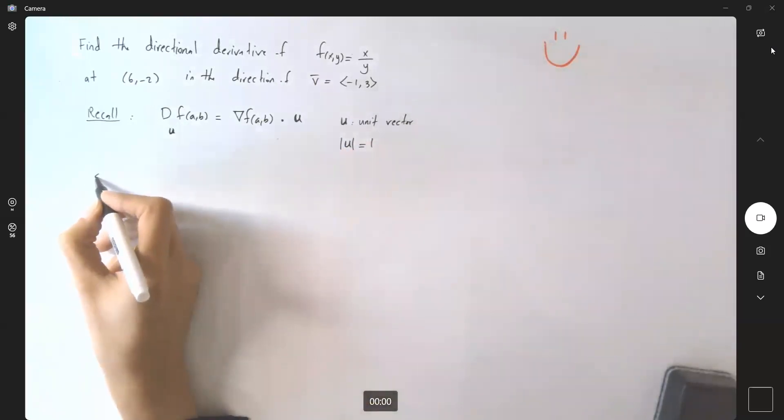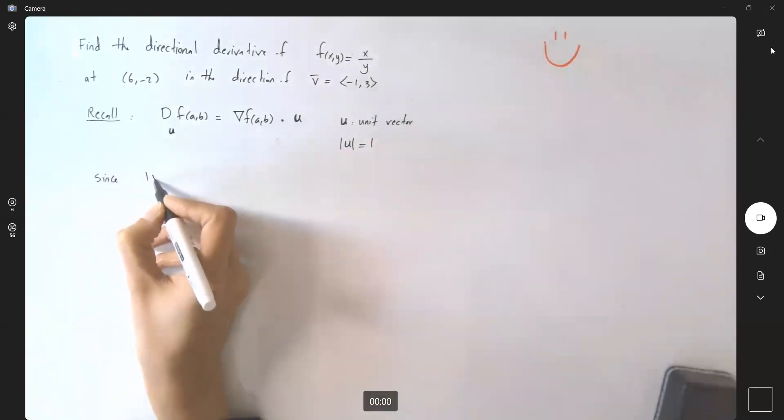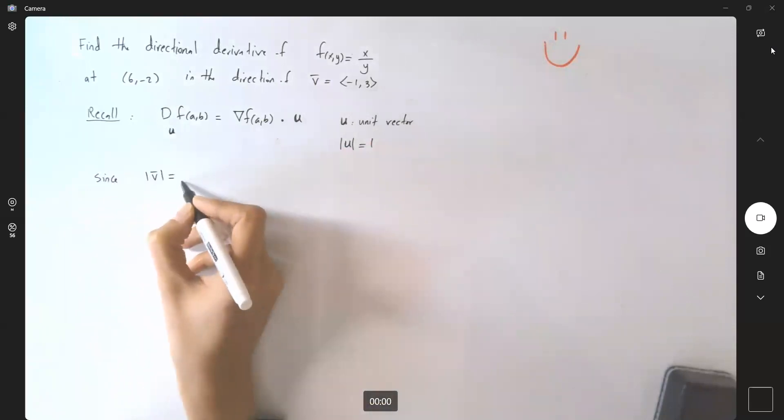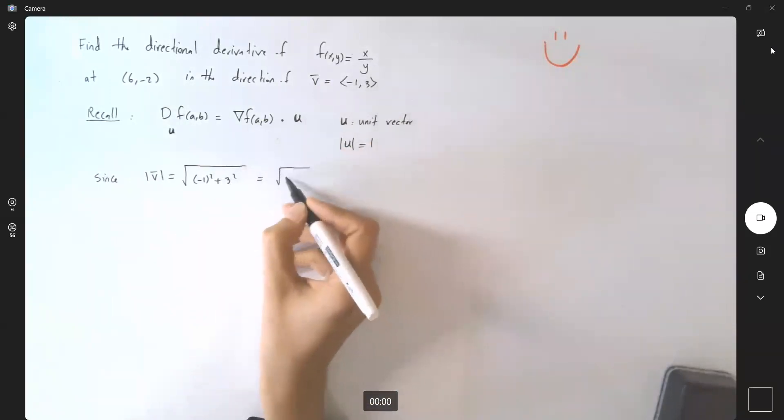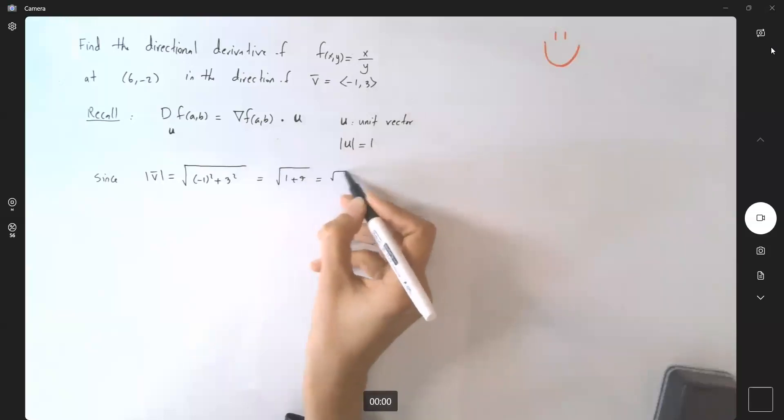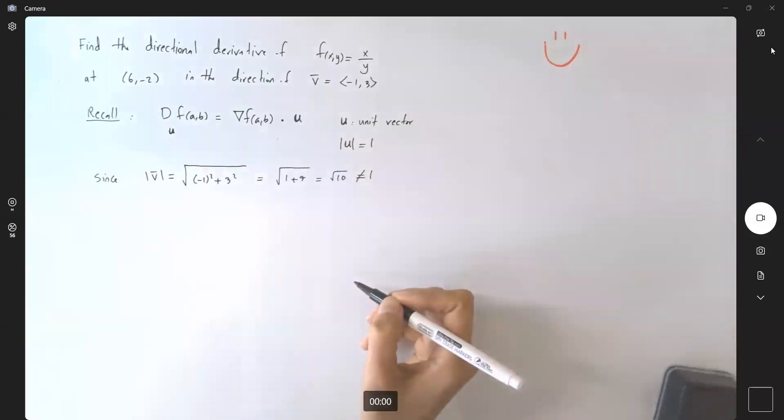So let us check. Since the norm of vector v is equal to the square root of (-1)² plus 3², which is 1 plus 9 or square root of 10, it's not a unit vector.